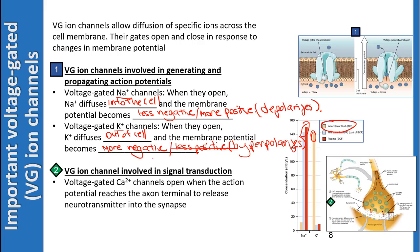The third important voltage-gated ion channel is involved in signal transduction: the voltage-gated calcium channel. When an action potential travels down the axon and reaches the axon terminal, it changes the voltage there and opens up the calcium ion channels. Calcium diffuses into the axon terminal, causing vesicles containing neurotransmitters to fuse with the plasma membrane and release the neurotransmitter.